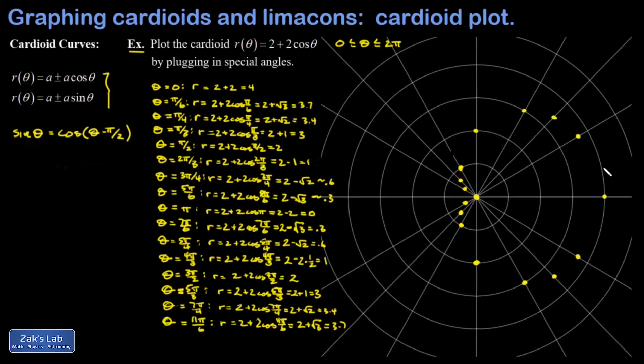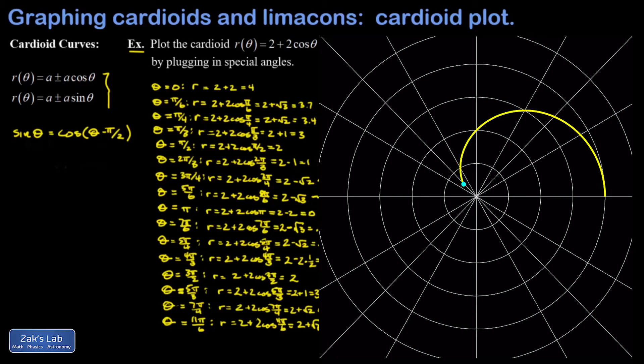So now all that's left to do is connect the points with a smooth curve. I'm not going to torture you with my attempt to do this with a digital pad. I'm just going to bring in the animation and we'll see how this thing is traced out as theta goes from 0 to 2π.